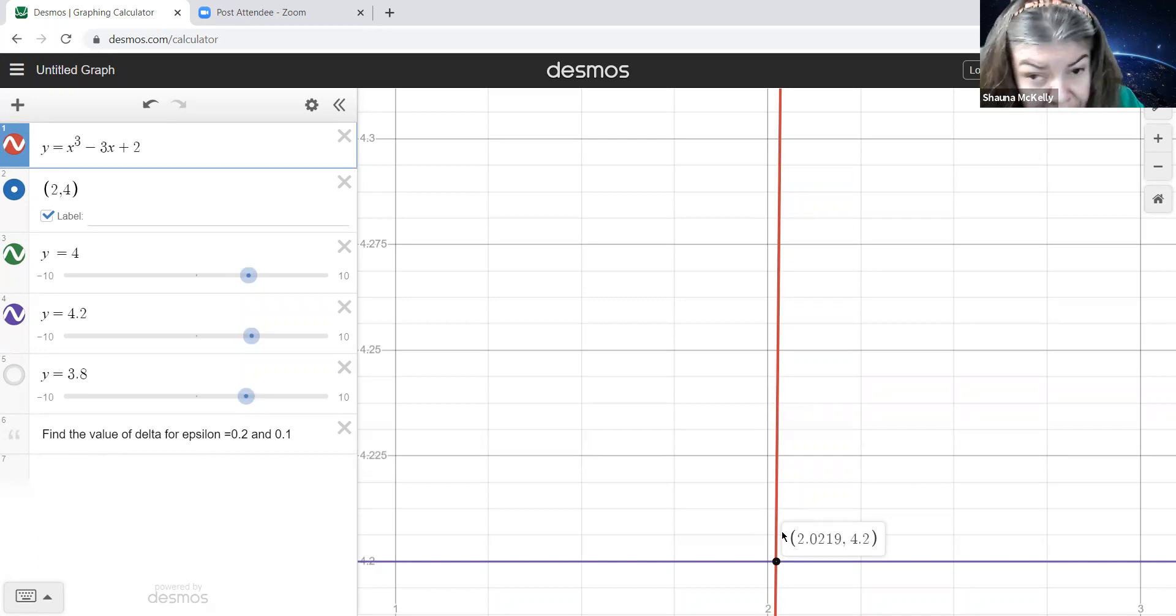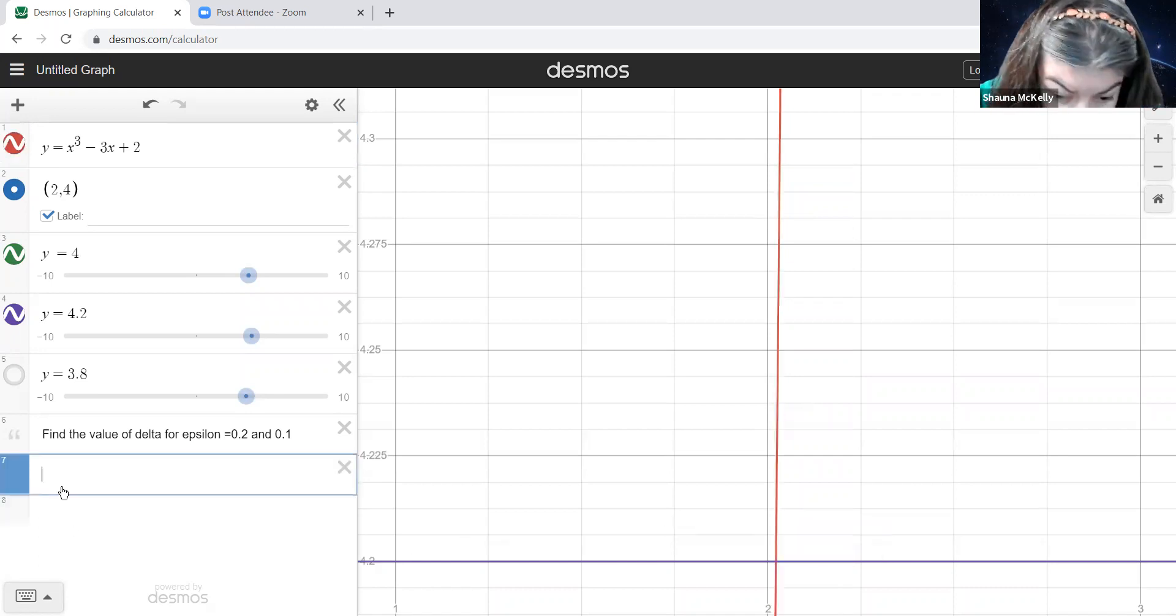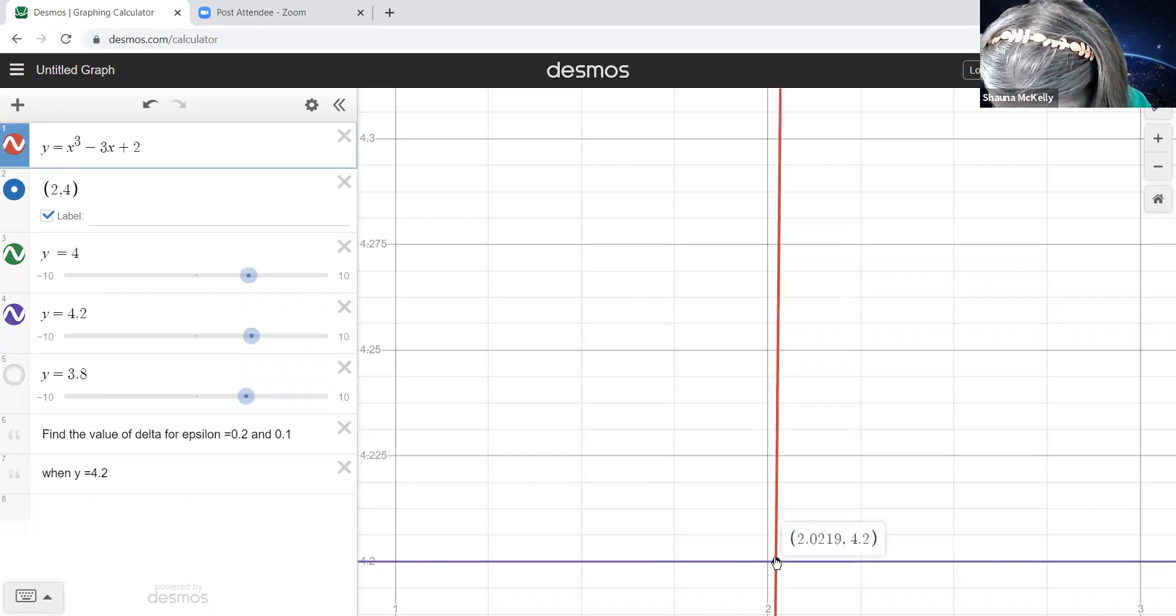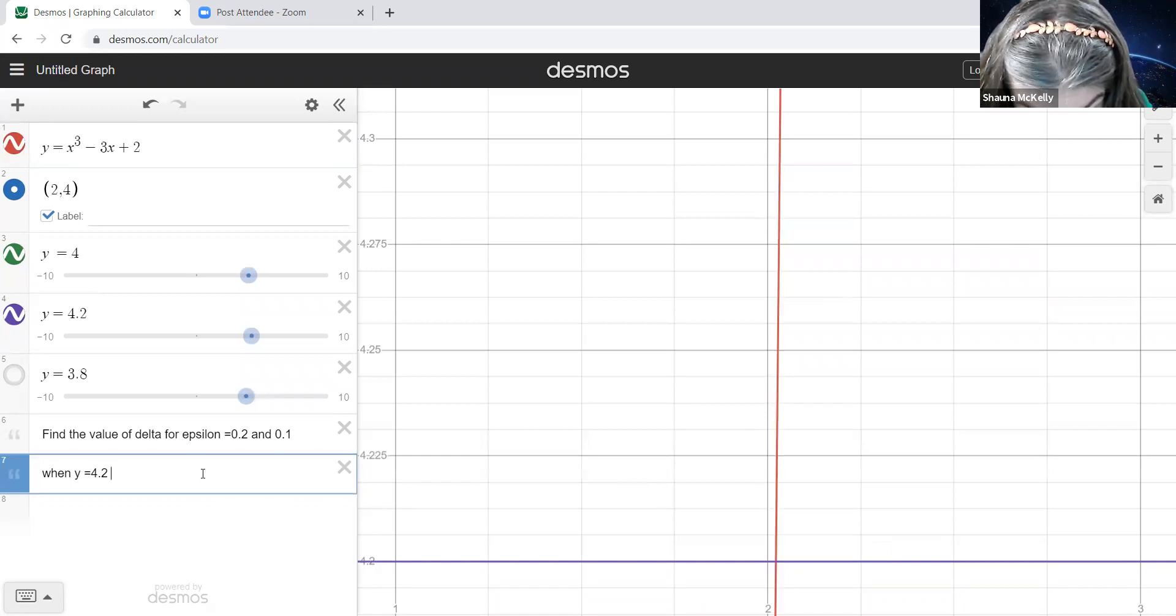On Desmos, what you can do is zoom in and push around the point. So I'm going to push around this point here and I'm going to continue to push in until I see more decimal places. There's four decimal places. So 2.0219 is what it's giving me for x. Now, keep in mind, this is not your delta. This is your x. So let me write us a note here. So when y was equal to 4.2, x is 2.0219.